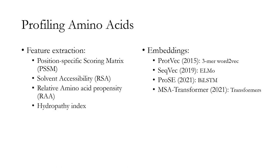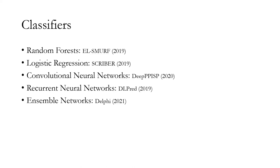Aside from this, profiling the amino acid could be done in an unsupervised approach with embeddings. ProtVec was introduced in 2015, which combines the word-to-vec algorithm with trimers. There is also SeqVec, which was proposed in 2019 and employs the ELMo architecture. In 2021, PROSE was presented, which uses three different bi-LSTM networks. At the same year, the multiple sequence transformer was introduced.